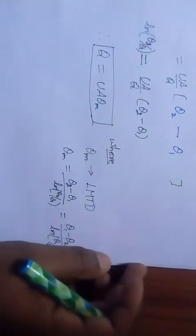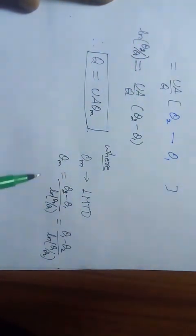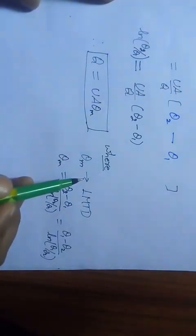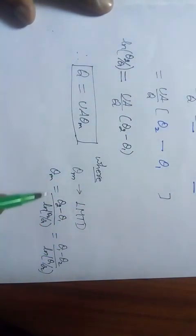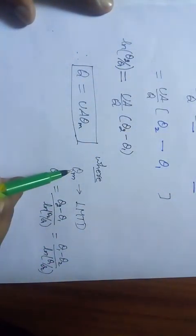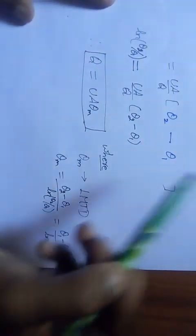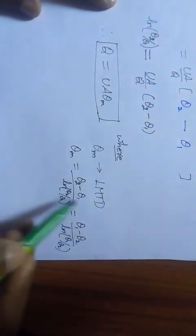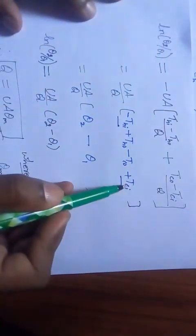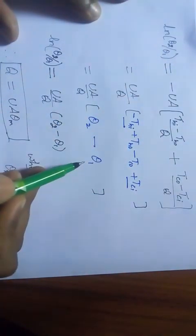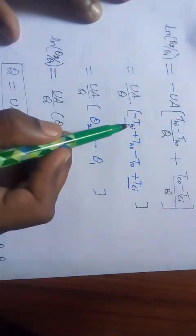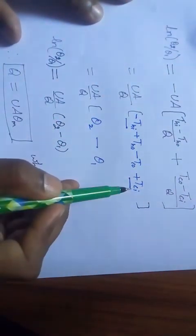If the exam question asks you to derive LMTD, you must state and define the θm term — that is important. If the question asks to derive the equation for rate of heat transfer, not defining θm explicitly is not a big mistake, but since you have done two pages of derivation, it doesn't take much to add those steps. I hope you have understood this concept. Thank you.